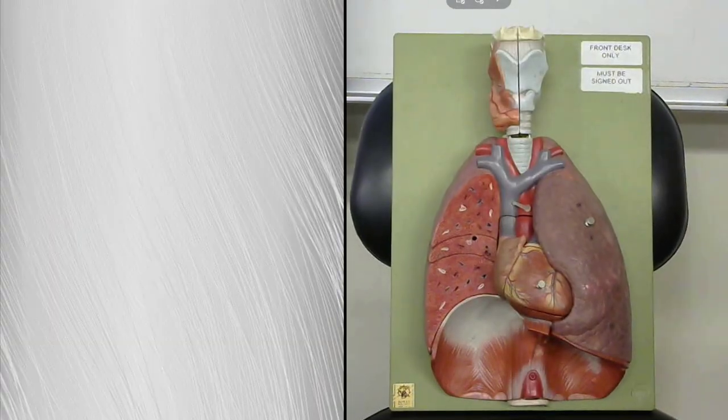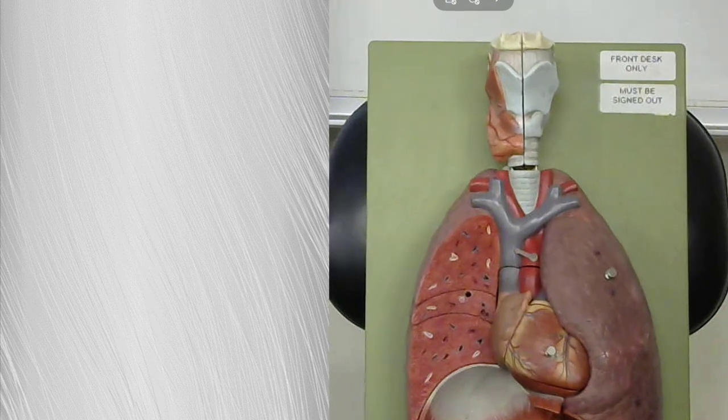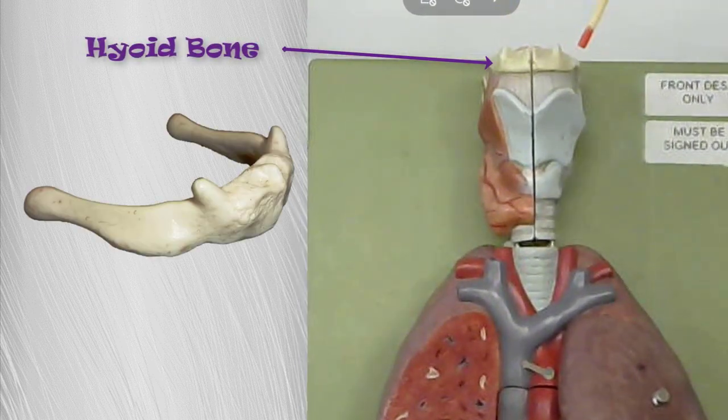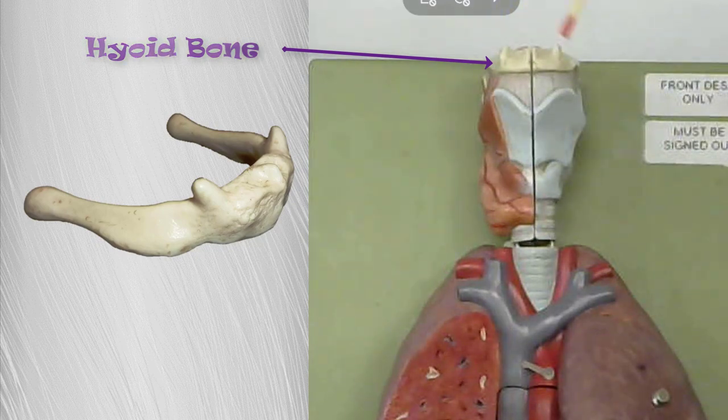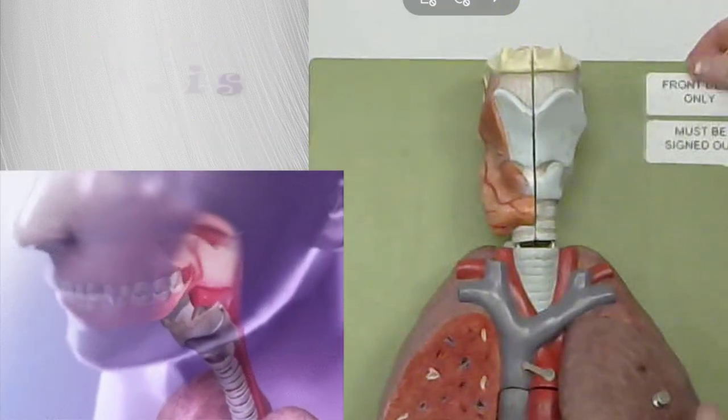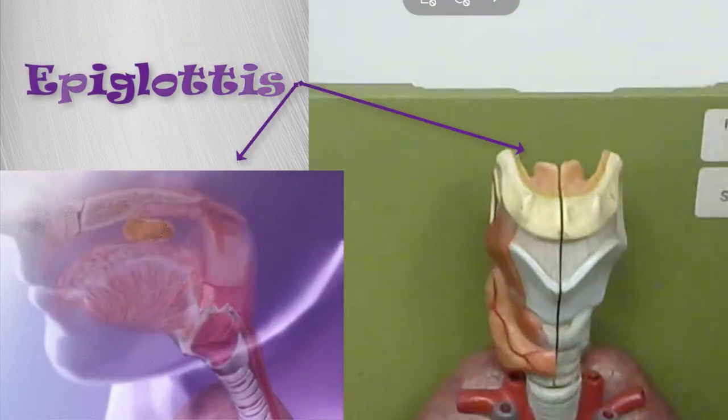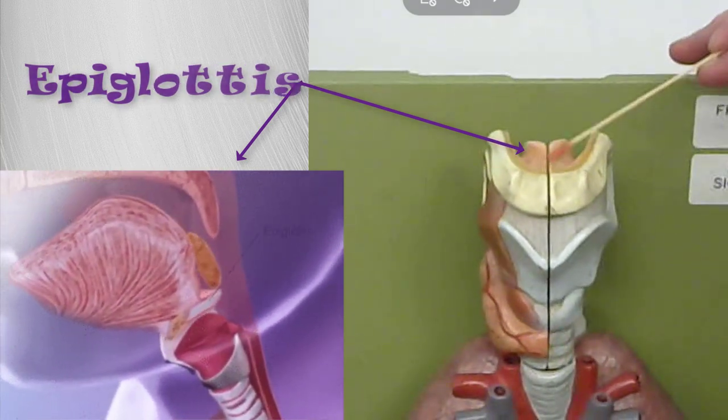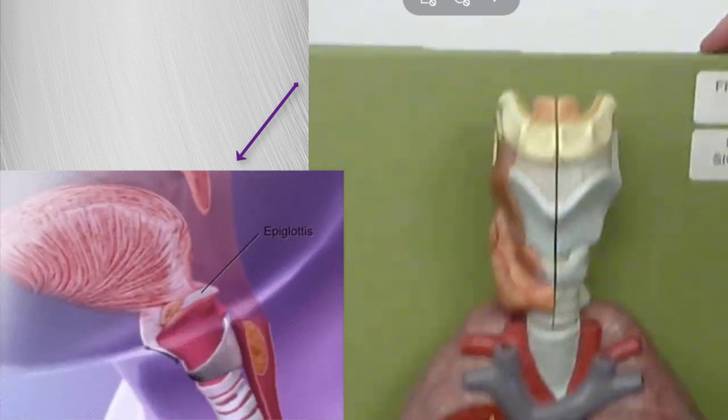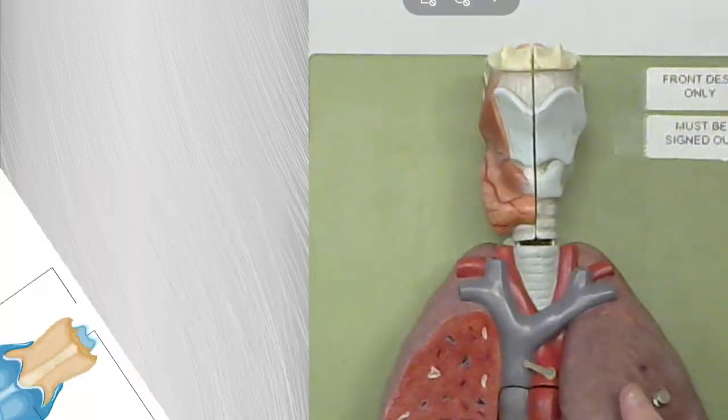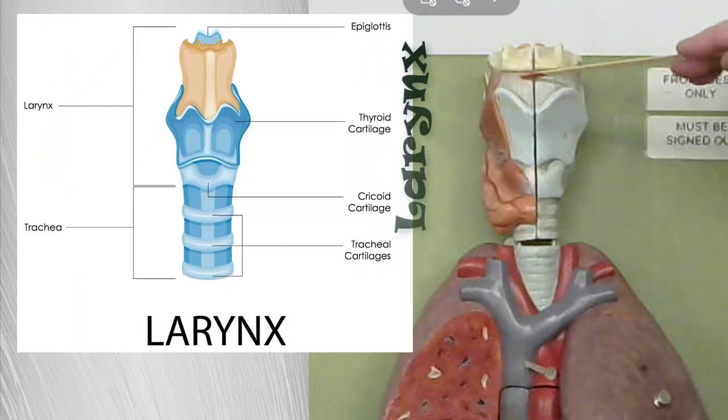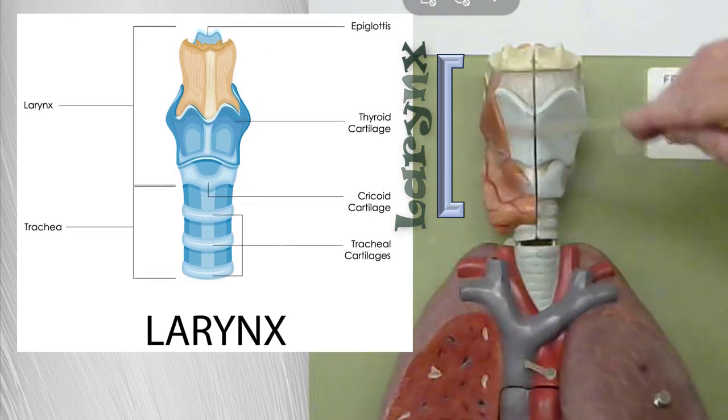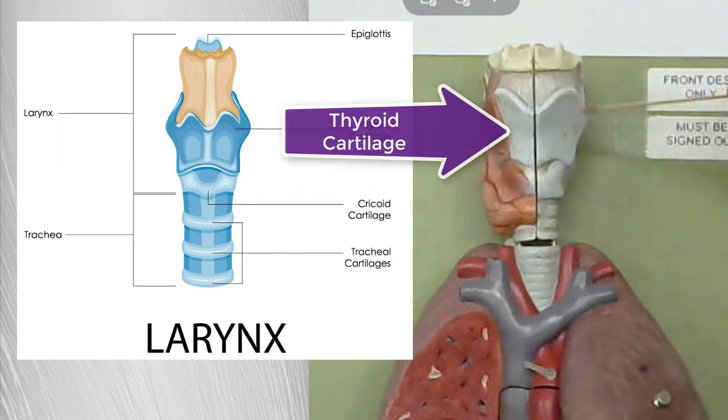This is our anatomical model of the respiratory system. At the top here is the hyoid bone, and when you tilt this over you can see this structure, which is the epiglottis. Here's the hyoid bone again. We see some of the larynx showing through. Now the larynx continues underneath here. This is the thyroid cartilage.